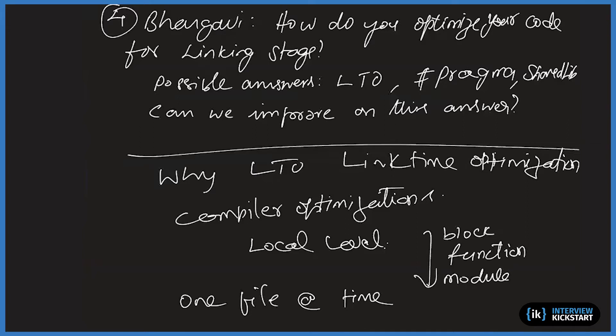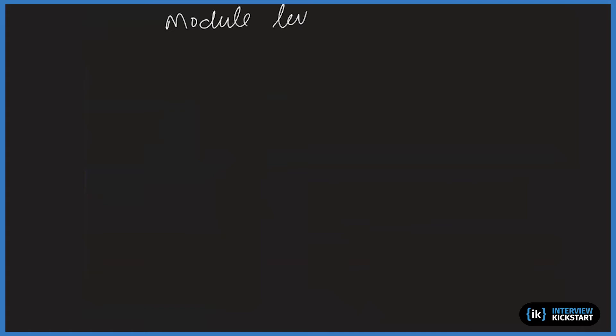All optimizations are done based on whatever information the compiler has in the source file of a module. It does code optimization as locally as possible. There are many levels of optimization — there is something called peephole optimization done a little later after certain operations. But compilers are basically myopic; they work at most at the module level.